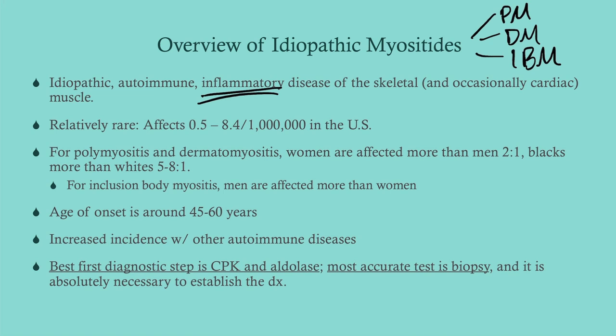The best first diagnostic step is a CPK — you can add aldolase alongside it, but CPK is the big one. That is a mandatory test anytime somebody comes in weak. If the CPK and aldolase come back elevated, you move on to a biopsy, which is absolutely essential to establish the diagnosis. This is a histopathological diagnosis.